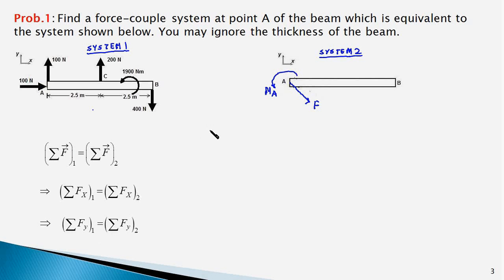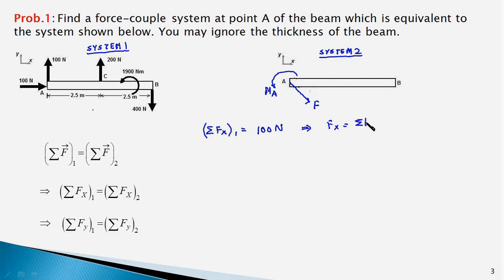Let us find the sum of forces in the X direction in system 1. We have just one force in the X direction, which is 100 Newton. Therefore, Fx equals 100 Newton in the positive X direction. We can mark the X component of the force, Fx, in the diagram accordingly.